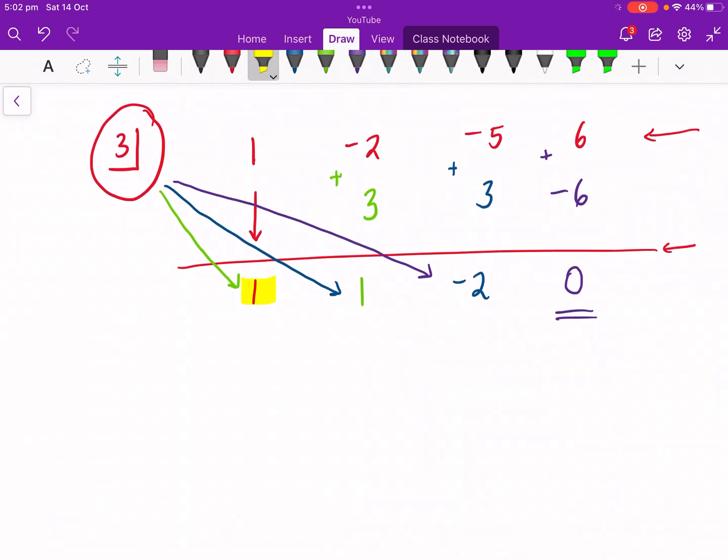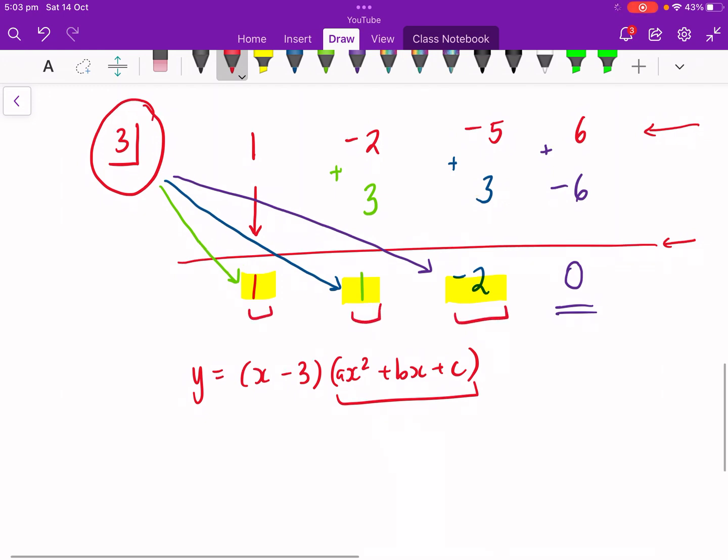These numbers that we've just come up with here represent the coefficients of our quadratic part. So let's rewrite this. So I'm going to write, remember I had x minus 3 because I was told 3 was already a root. And then ax squared plus bx plus c. We have some sort of quadratic that we don't know. But now we know our coefficients. Let's put them in.